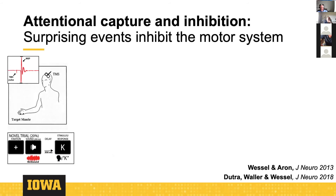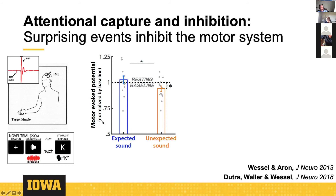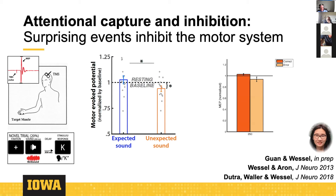This is our first attempt at really nailing down that unexpected events — not just action errors but general unexpected events — produce inhibition of the motor system. We measured corticospinal excitability from a specific muscle: stimulate sensorimotor cortex, measure EMG from the target muscle, and produce a deflection in the motor evoked potential indexing corticospinal excitability. We find that when participants doing a simple reaction time task encounter unexpected perceptual events, their corticospinal excitability is reduced even though there's no instruction to inhibit anything.